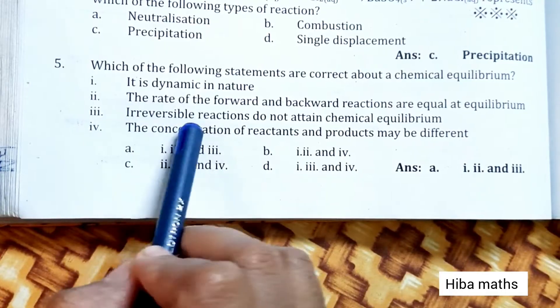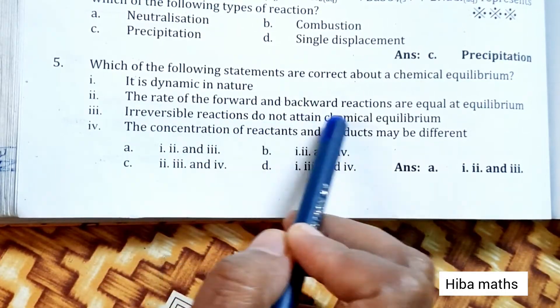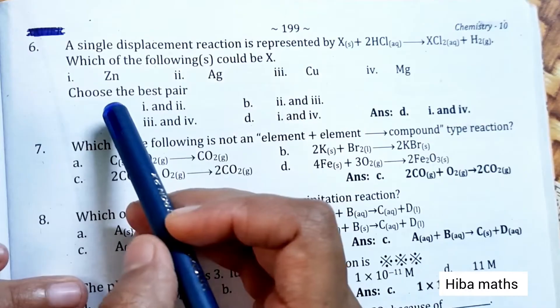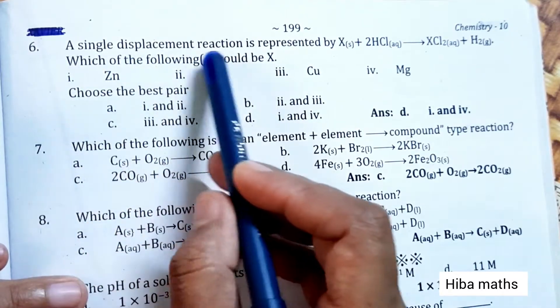Irreversible reactions do not attain chemical equilibrium. A single displacement reaction is represented by X plus 2HCl gives XCl2 plus H2.